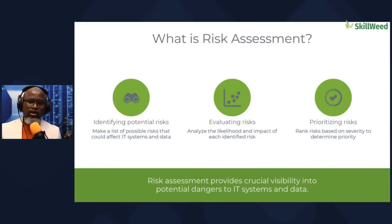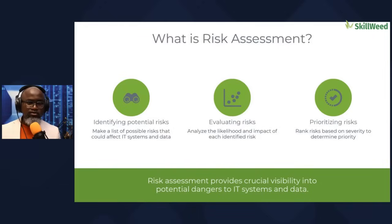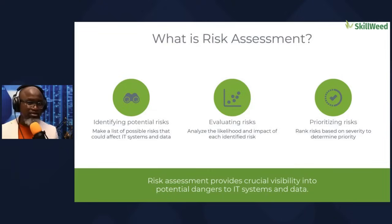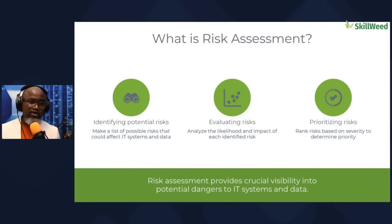Then we prioritize the risk. For example, what is the risk of a tornado coming to your home and wiping away your devices? The impact is probably high — it means you'll be out of connection if it's a business — but the likelihood may be minimal. That is fair. Then we assess what the impact on your business would be. We rank risks in terms of severity, and because nobody has unlimited resources, it makes sense to prioritize which ones to take care of first.